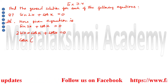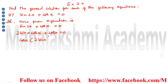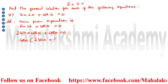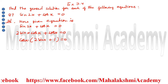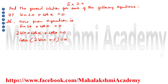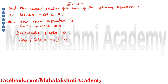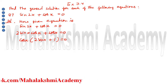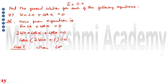After taking cos x common, we obtain cos x multiplied by the bracket (2 sin x plus 1) is equal to 0. The product equals zero, so either cos x is equal to 0 or the bracket 2 sin x plus 1 is equal to 0. We have to take both cases one by one. Case first: when cos x is equal to 0.